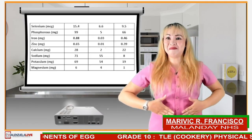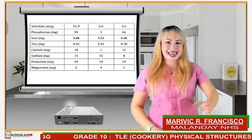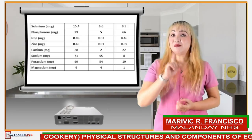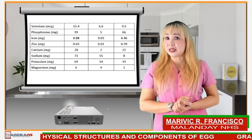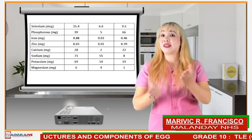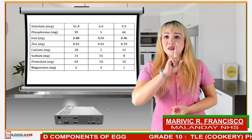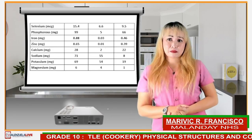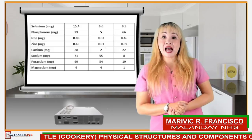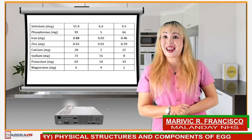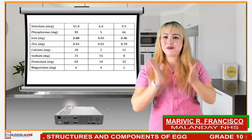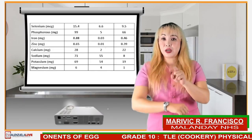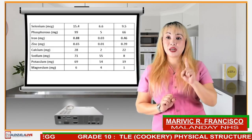Vitamin A protects your eyes from night blindness and age-related decline, may lower your risk of certain cancers, supports a healthy immune system, reduces your risk of acne, supports bone health, and promotes healthy growth and reproduction. Vitamin B6, also called pyridoxine, plays a key role in metabolism, brain function, and healthy hair and skin. It may help to protect against air pollution. Vitamin B1, or thiamine, helps with functions in the nervous system, brain, muscles, heart, stomach, and intestines. It is also involved in the flow of electrolytes into and out of muscle and nerve cells.